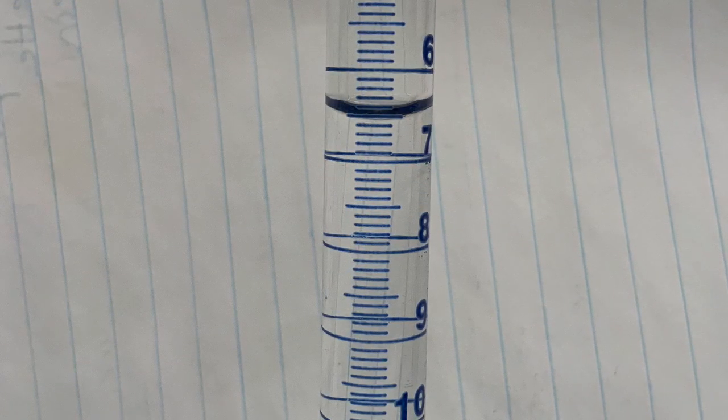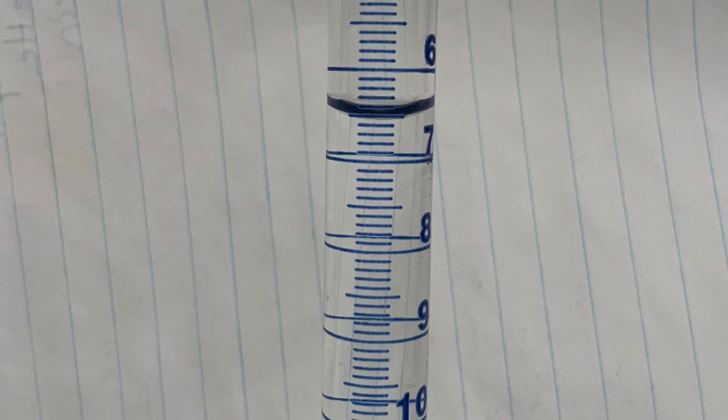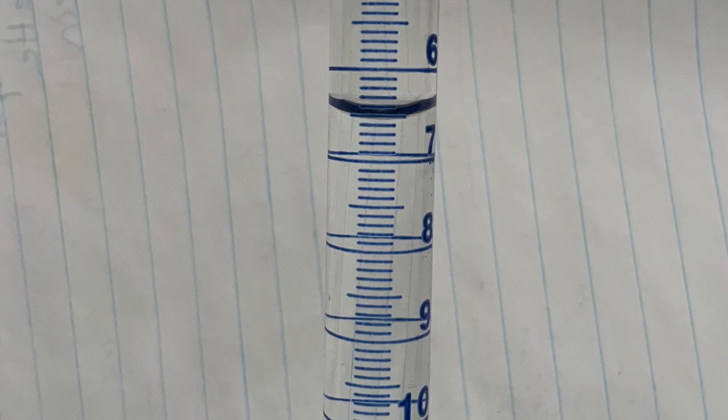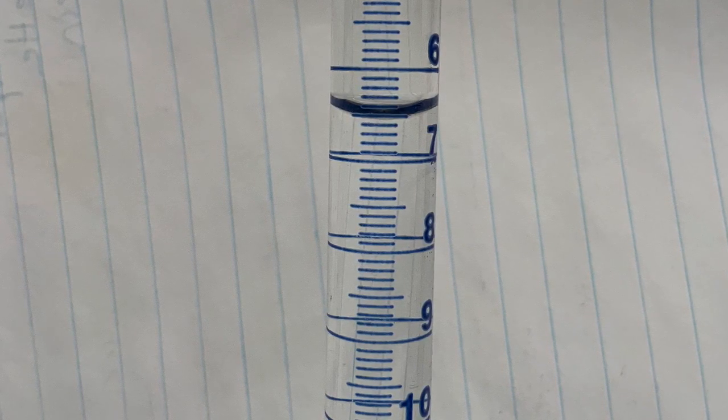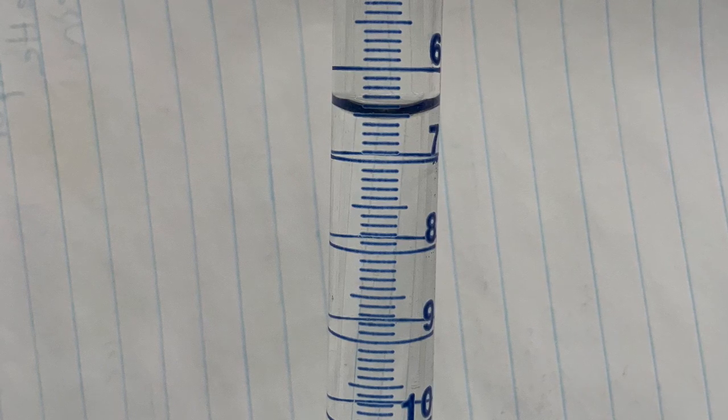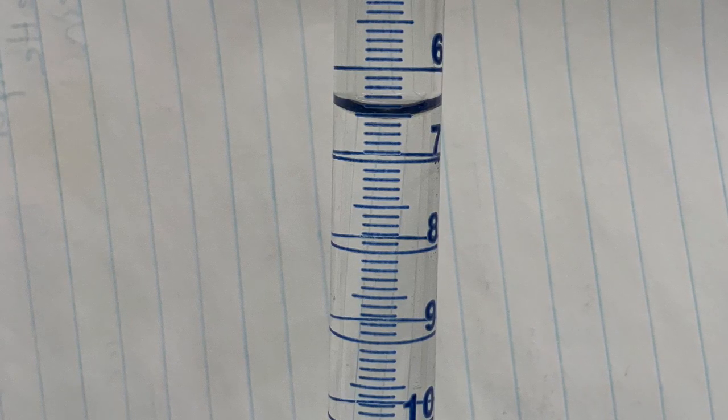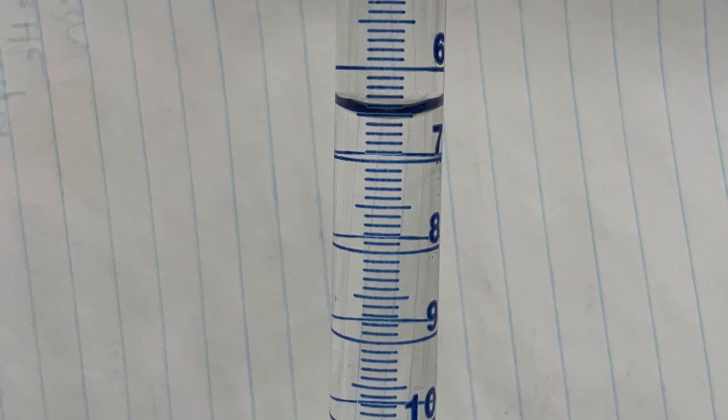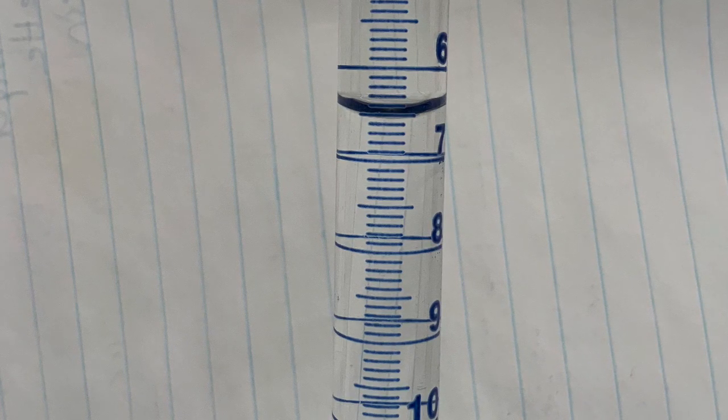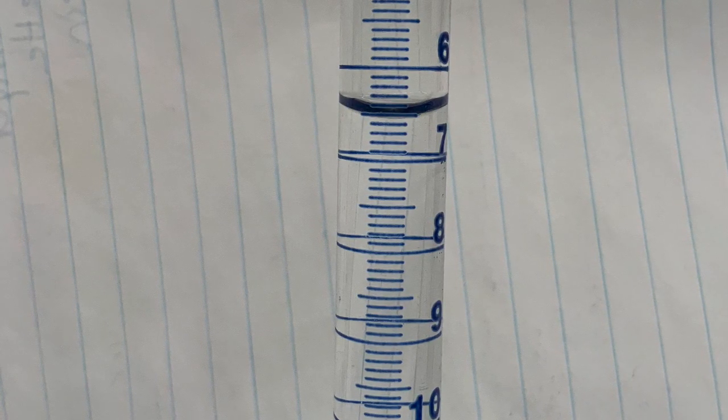Then we fill the burette with fresh sodium hydroxide solution and we do not want to waste time trying to hit the 0.0 milliliter mark. We fill it near the top and then record the reading, in this case 6.5 milliliters, that's our initial reading.